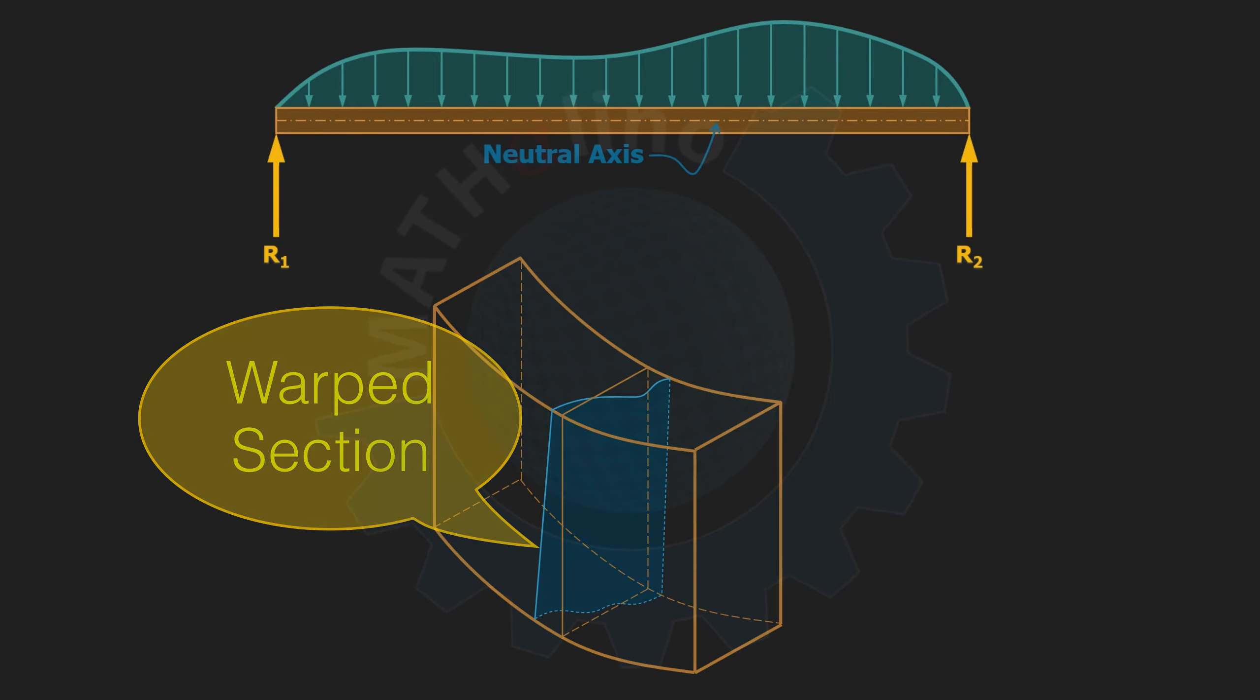Number five, the plane of loading must contain the principal axis of the cross section and the load must be perpendicular to the longitudinal axis of the beam. Number six, any deformation of the section within its own plane is neglected.